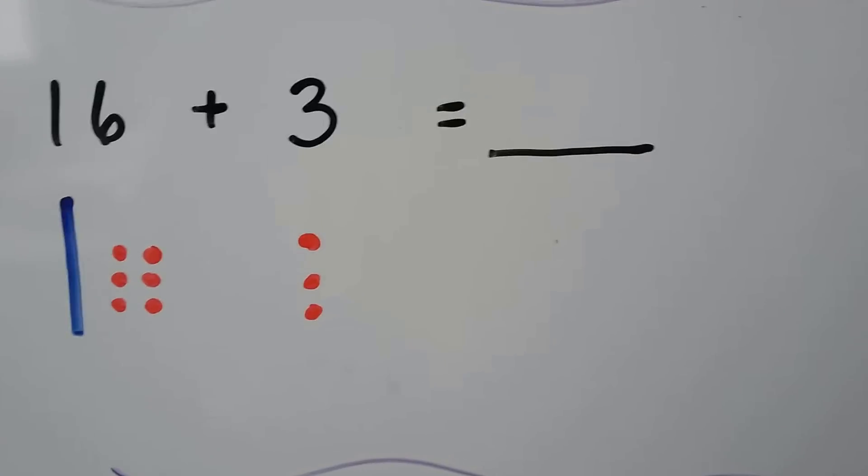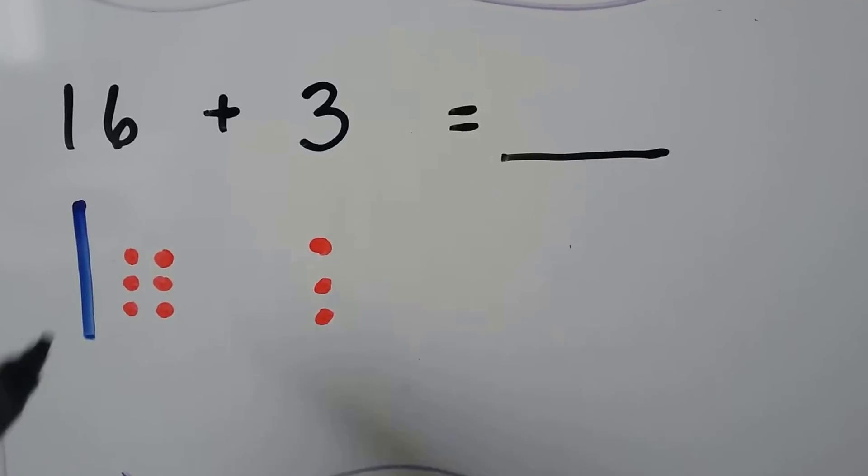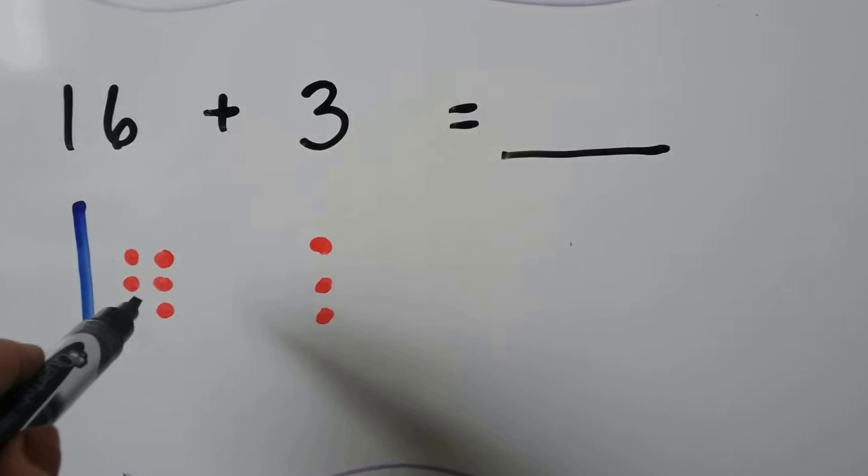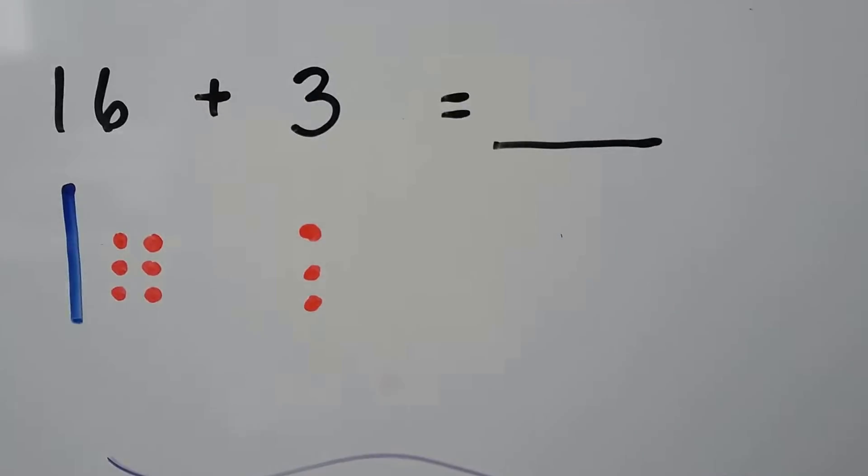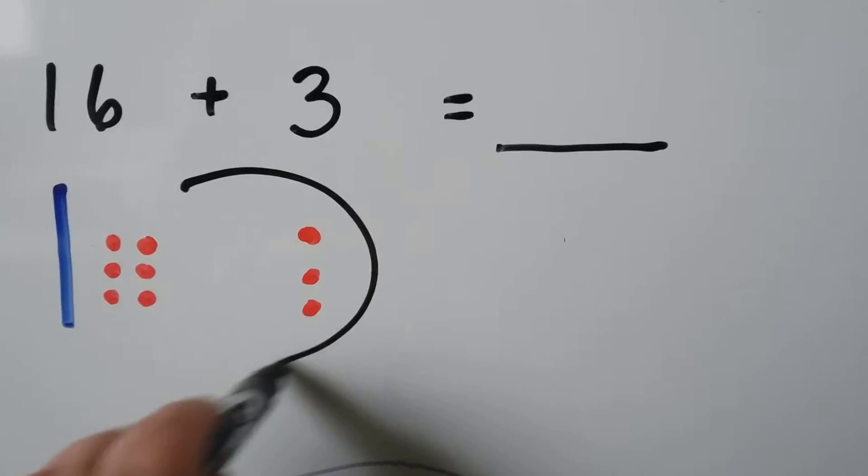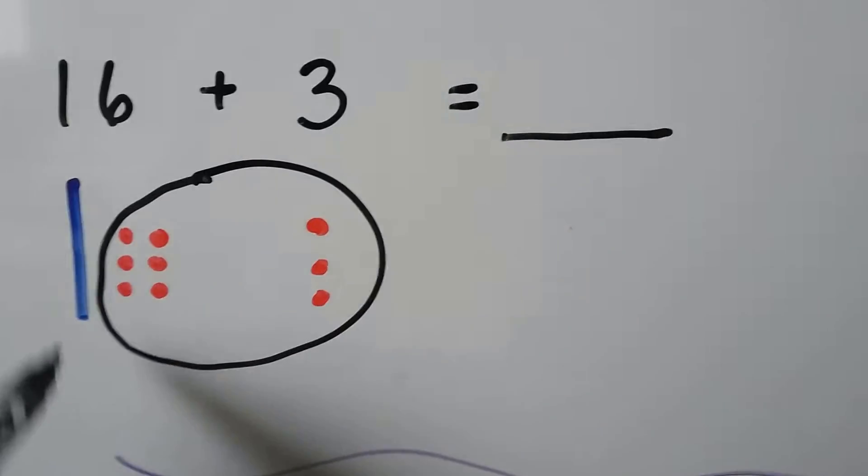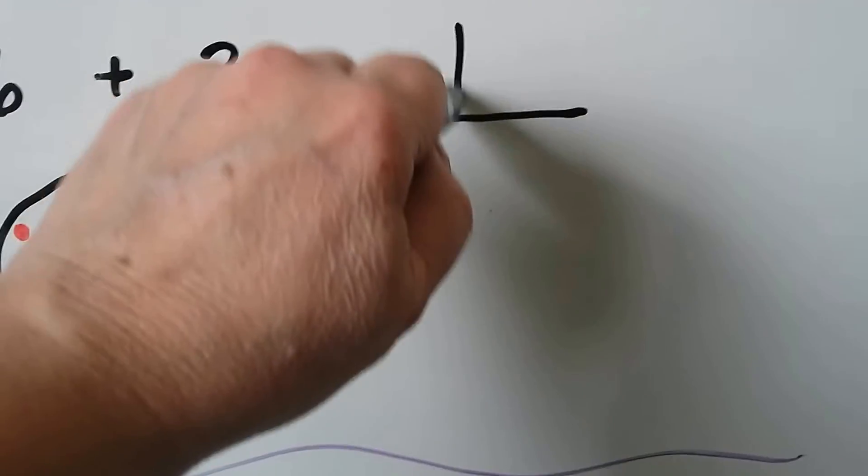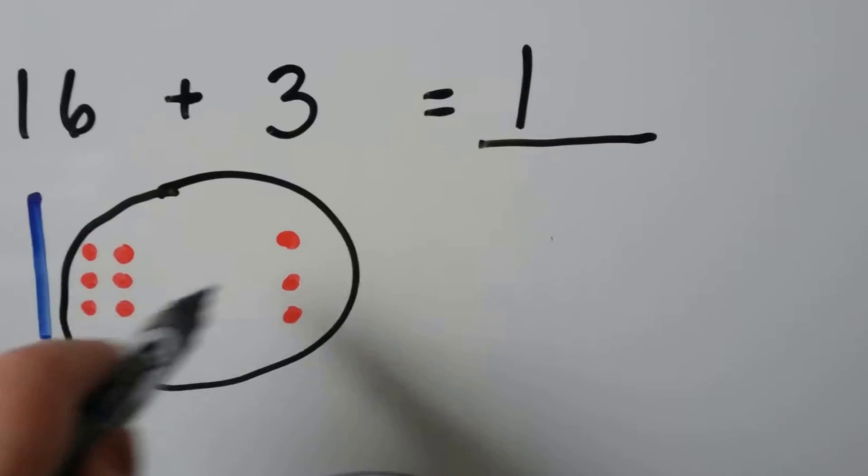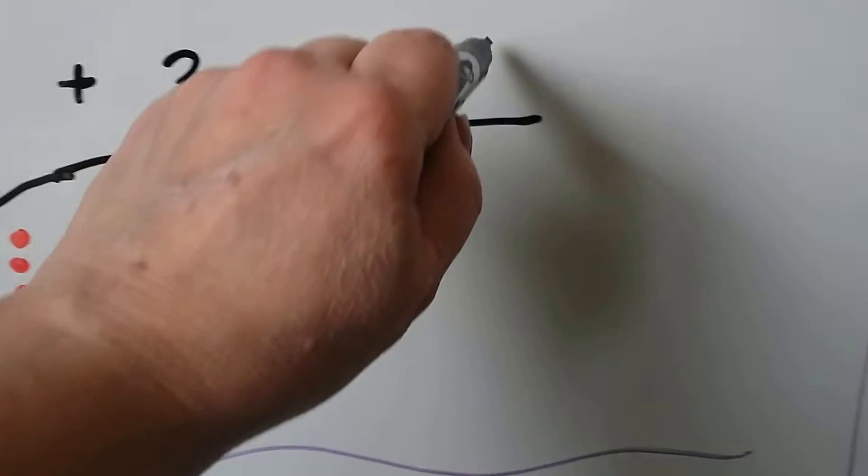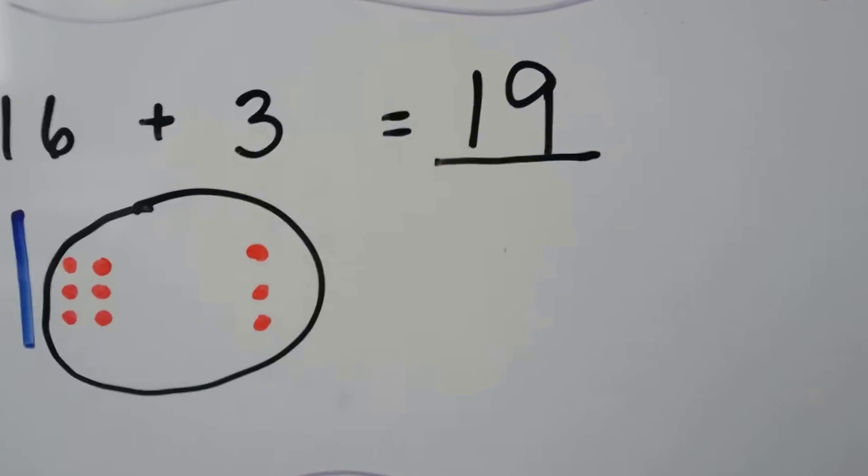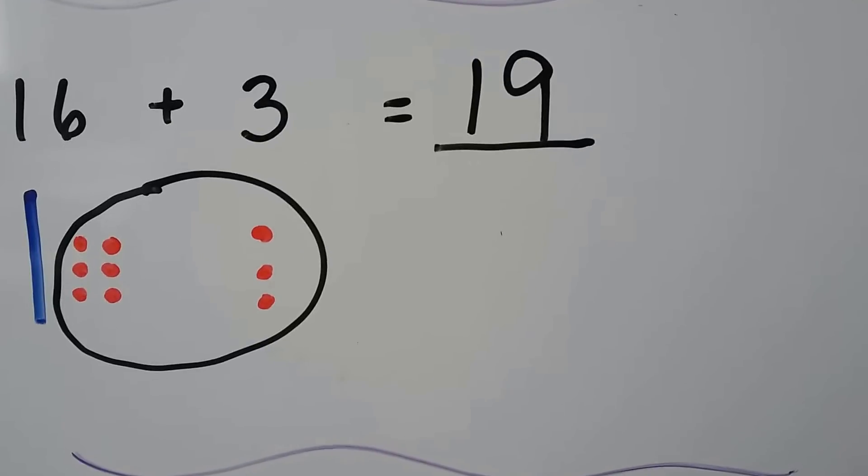16 plus 3. We can add 16 plus 3. We have one 10 and six 1s plus three more 1s. We can group the 1s together. We have one 10, and we have 6, 7, 8, 9 ones. 16 plus 3 is equal to 19.